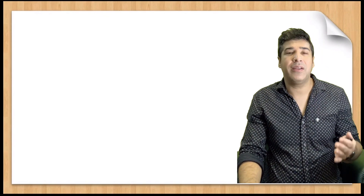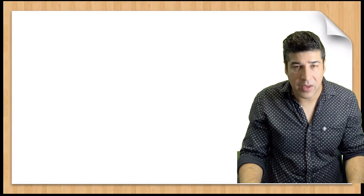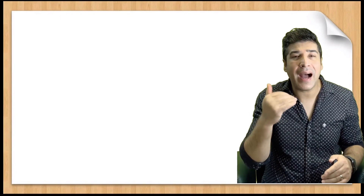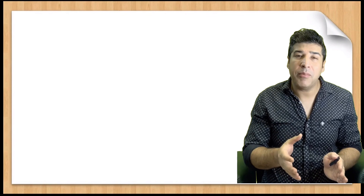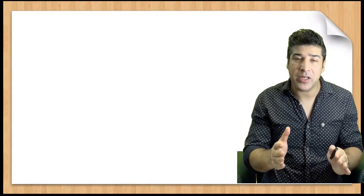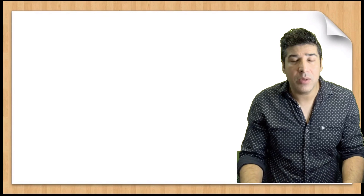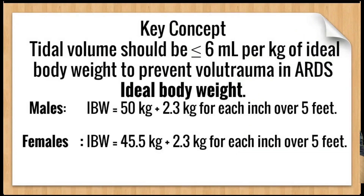In patients on pressure control ventilation, we can prevent volutrauma by setting lower proximal airway pressure, keeping an eye on the tidal volume the patient is generating, and ensuring it stays near 6 ml per kg body weight. The key concept: tidal volume should be less than or equal to 6 ml per kg ideal body weight to prevent volutrauma in ARDS patients.